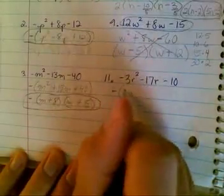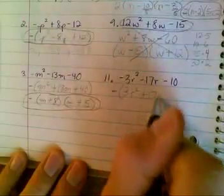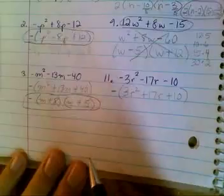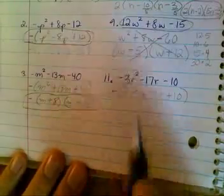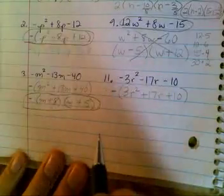So now I have 3r squared plus 17r plus 10. You never want to factor these with a negative sign out front. Some people do, but it's just easier to take out the negative sign and now work the rest of the problem.